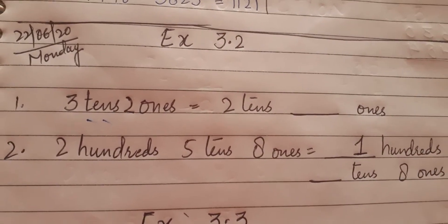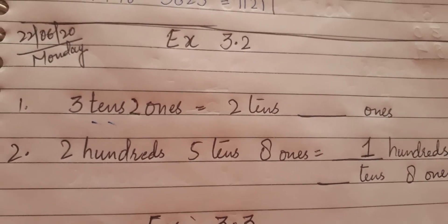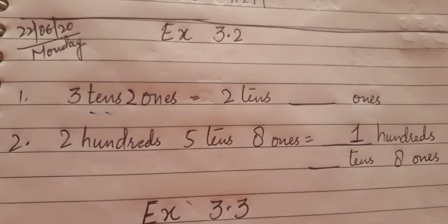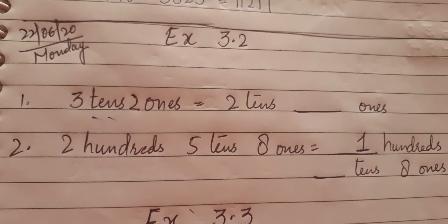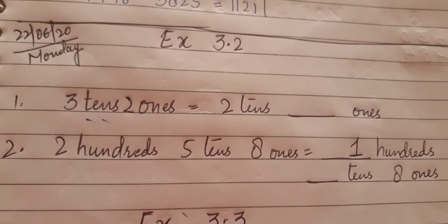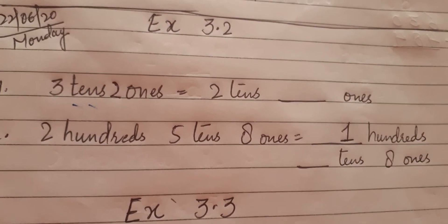This is exercise 3.2. In this exercise, we are going to learn about the decomposing of a number. The other name of decomposing is borrowing. There are actually two methods of borrowing. In this exercise, we are going to learn one of the methods, and in further exercises, we will learn the other methods.